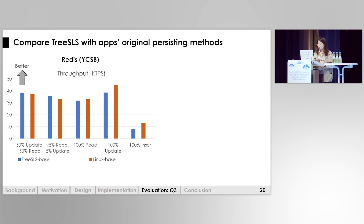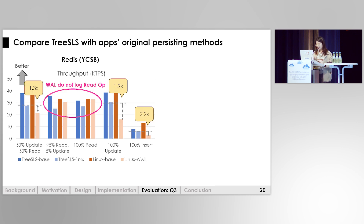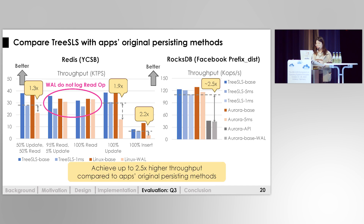Finally, we compare TreeSLS with the application's original persistence method: write-ahead logging, which logs client requests before executing them. We compare with Linux WAL, where the application implements write-ahead log for data persistence. The result shows that TreeSLS can achieve better throughput than Linux WAL in various workloads, except for read-only workloads since WAL has to do nothing for read operations. The same trend holds for the RocksDB benchmark, and we can achieve up to 2.5x higher throughput compared to the application's original persistent method.